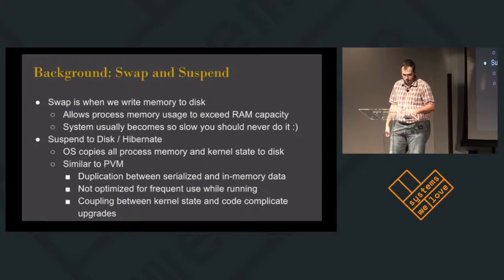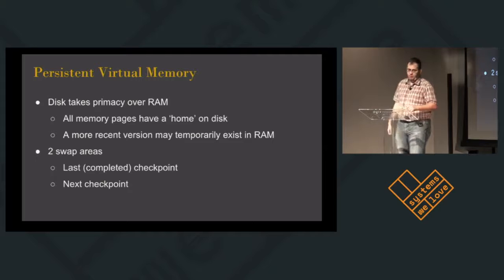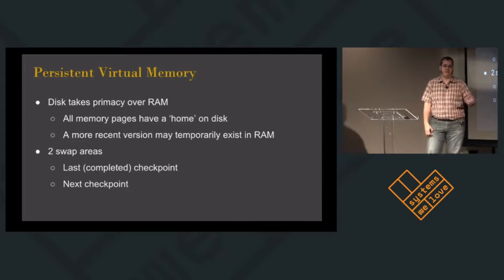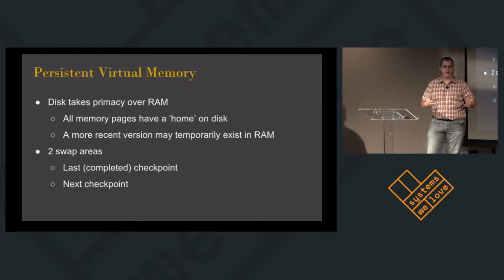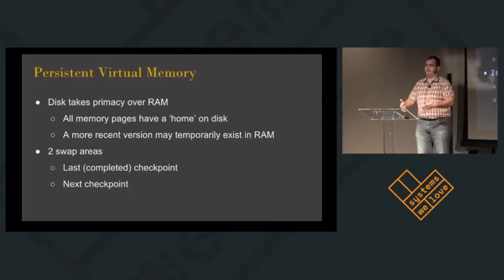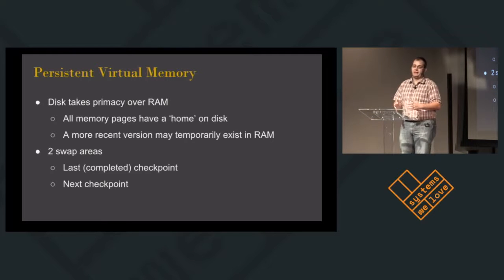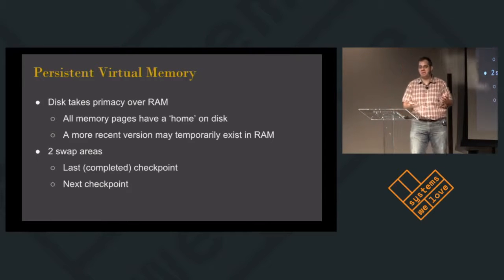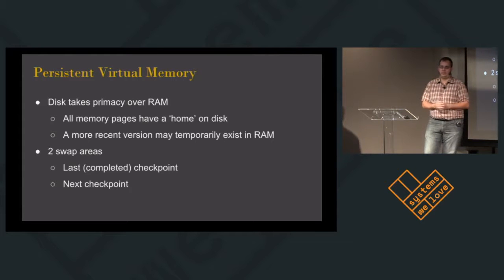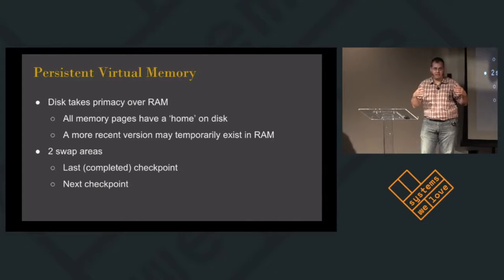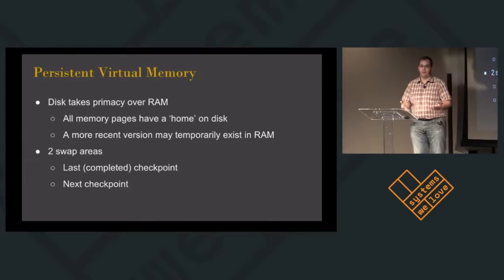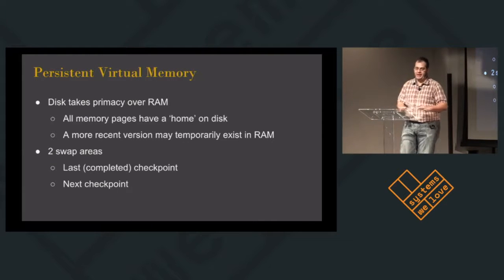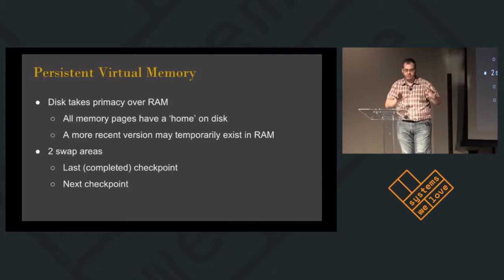The core idea is that disk takes primacy over RAM. All memory pages, when you call an allocator, are allocated on disk — they have a home location where they live. They might temporarily live in RAM, which is handy for accessing things at DRAM speeds instead of disk read speeds, but the process is never aware of this. It all happens transparently as an optimization. Everything lives on disk.